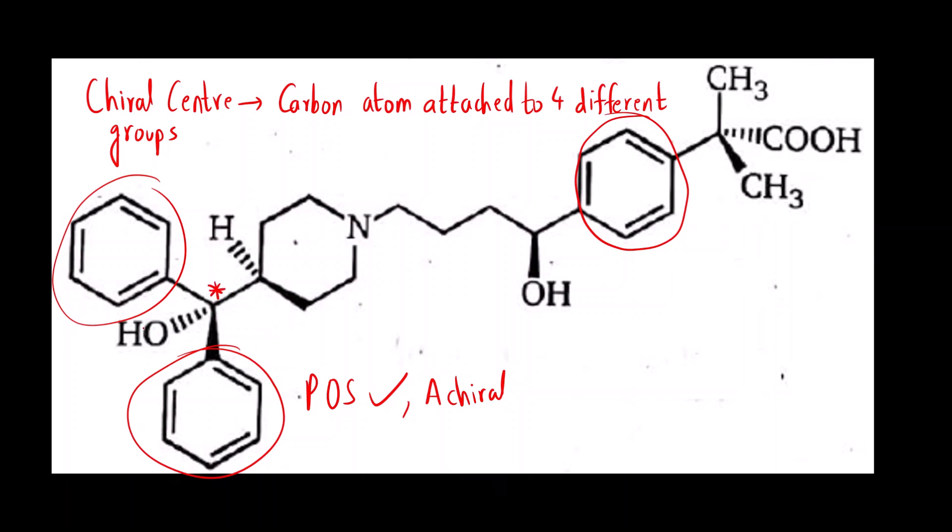Is this chiral? Here there is OH. Here there is this entire big group. But you can see there are two phenyl rings. Although the stereochemistry is shown, you have to check the groups. Two phenyl groups are same. So is this chiral? No. This is not chiral.